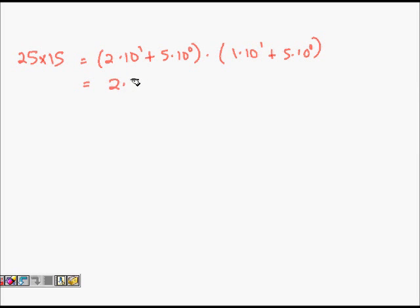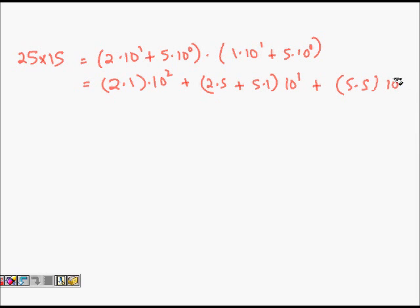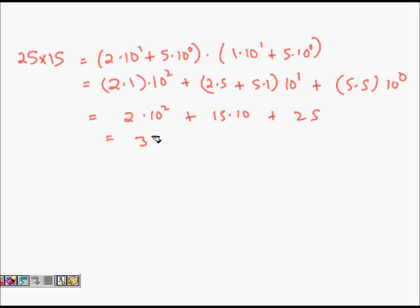Expanding the product gives: 2×1×10² + (2×5 + 5×1)×10¹ + 5×5×10⁰, which equals 2×10² + 15×10 + 25, giving 200 + 150 + 25 = 375. So that's the result of 25 × 15.